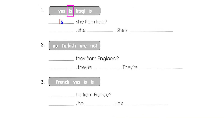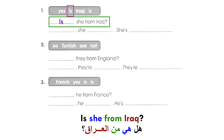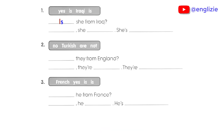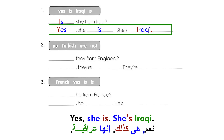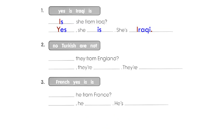1. Is she from Iraq? هل هي من العراق؟ Yes, she is. She's Iraqi. نعم، هي كذلك. إنها عراقية.